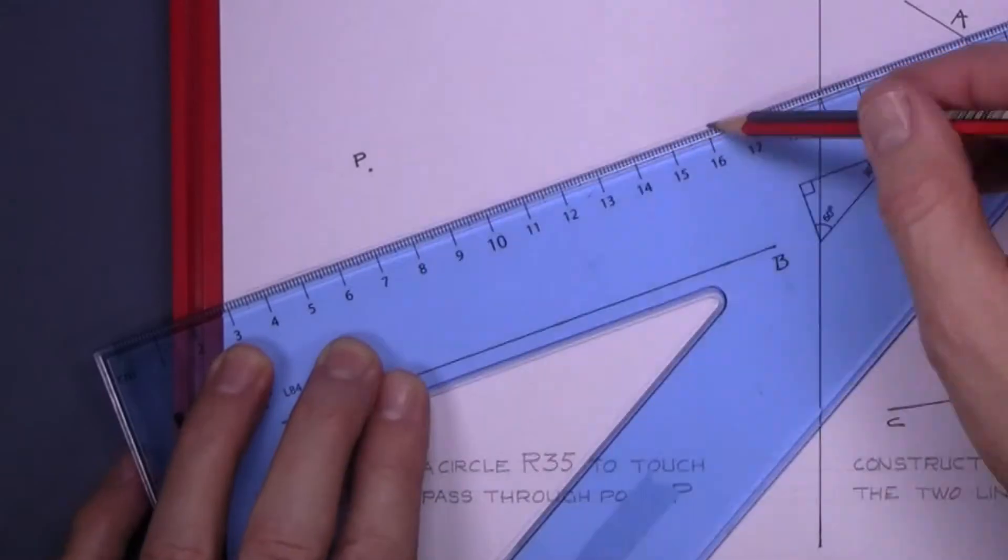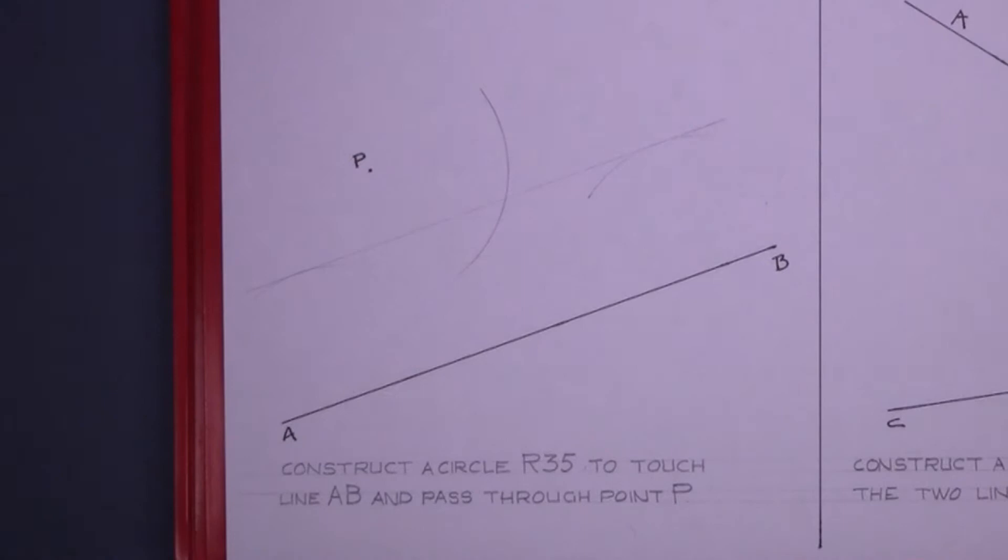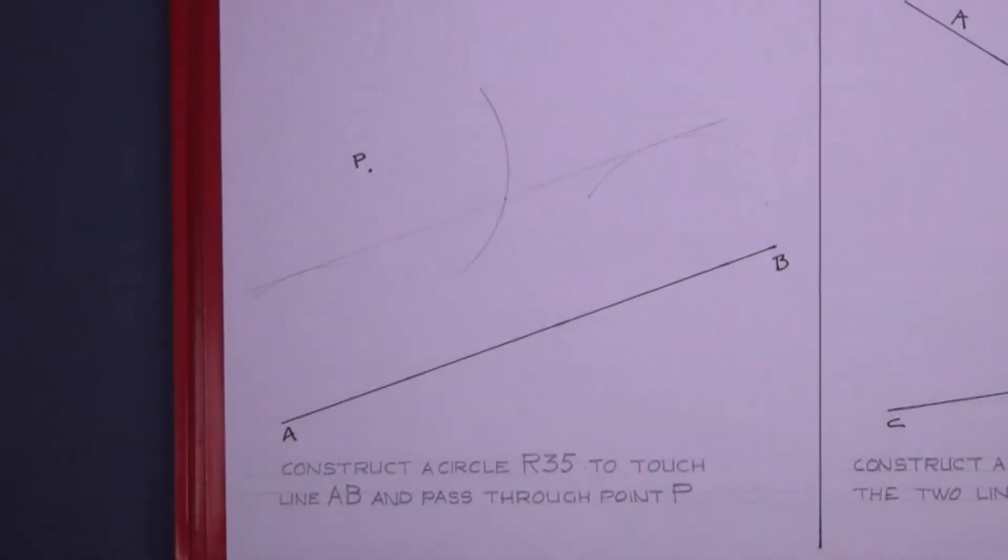Set the compass again to 35 from point P, draw an arc. Now that gets you the center point.